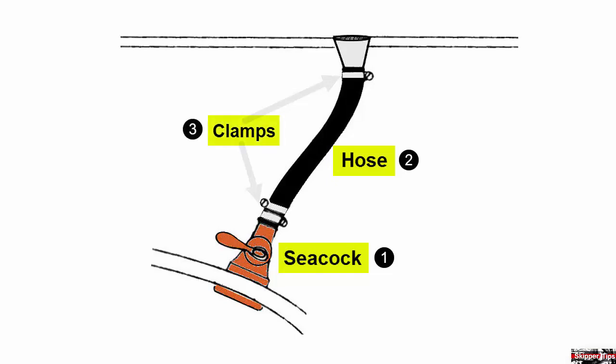The third part of our seacock system will be hose clamps. Choose marine stainless for hose clamps. These will last much longer in the marine environment. Place two hose clamps on the seacock side and one hose clamp on the fitting side.